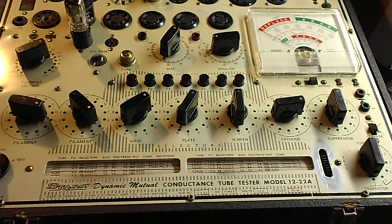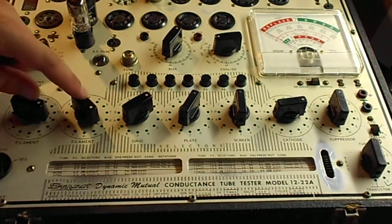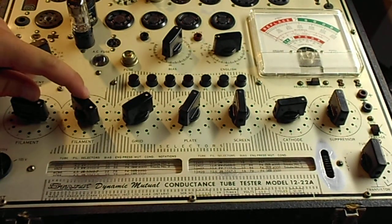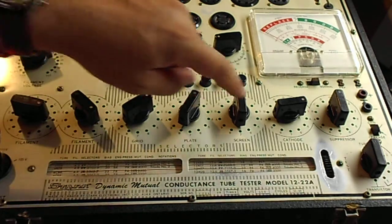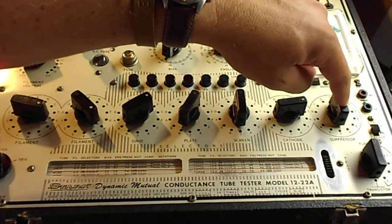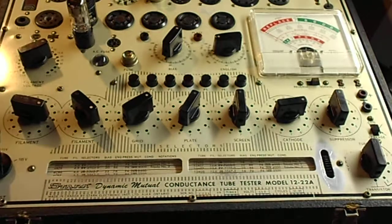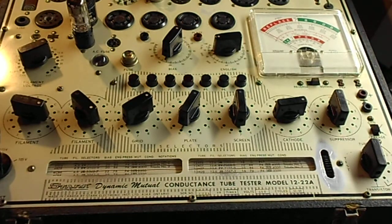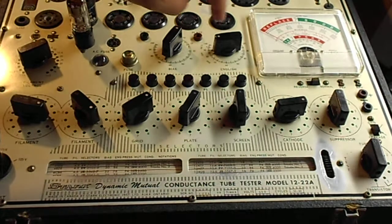Some of these switches are: two switches for filament, one switch for grid, plate, screen, cathode, suppressor, filament voltage, the voltage of your line in from the wall, bias in English.